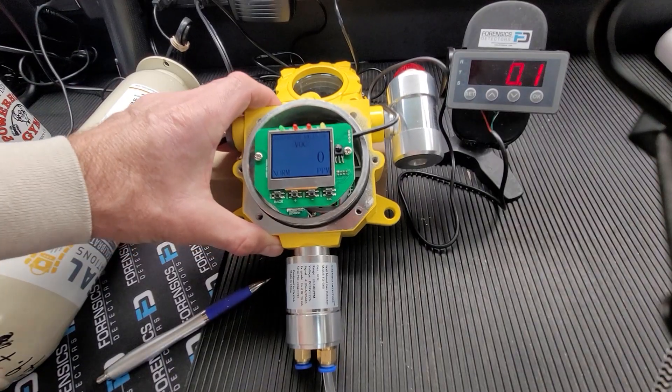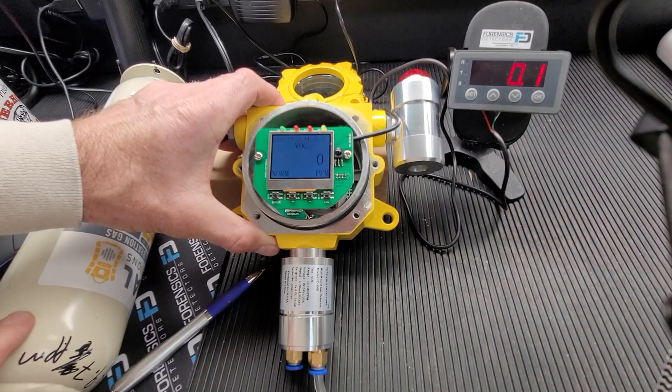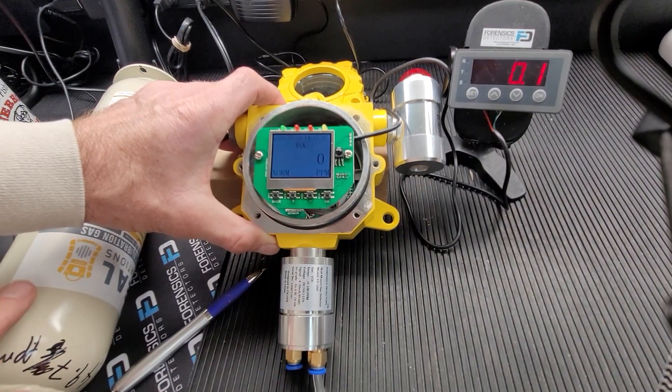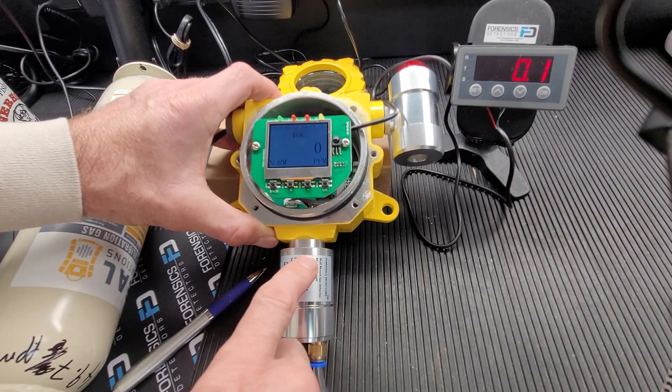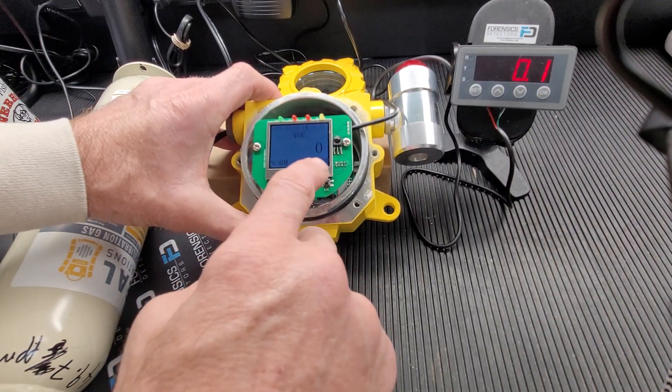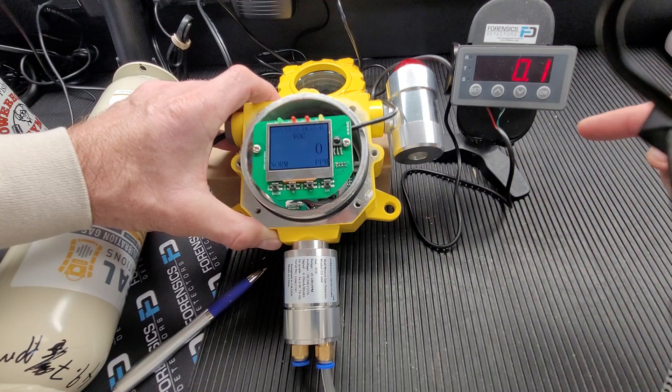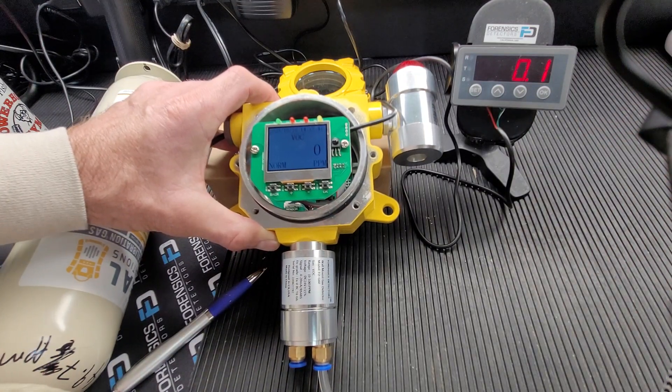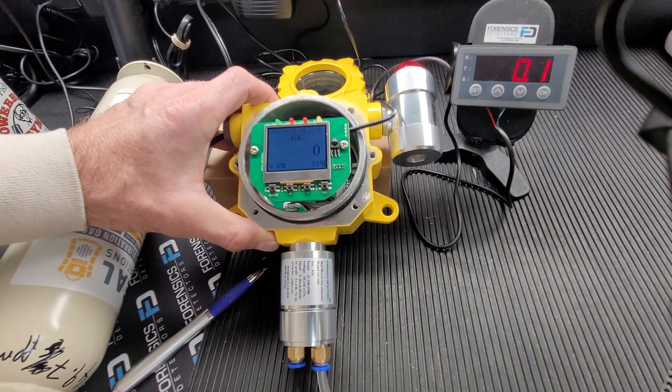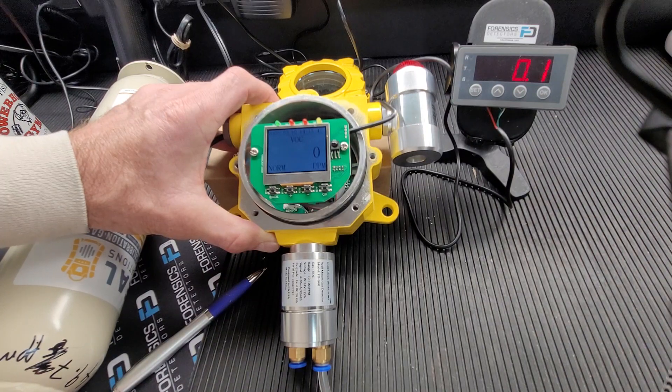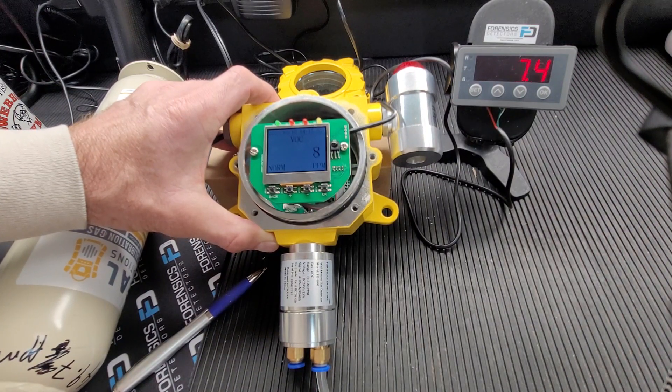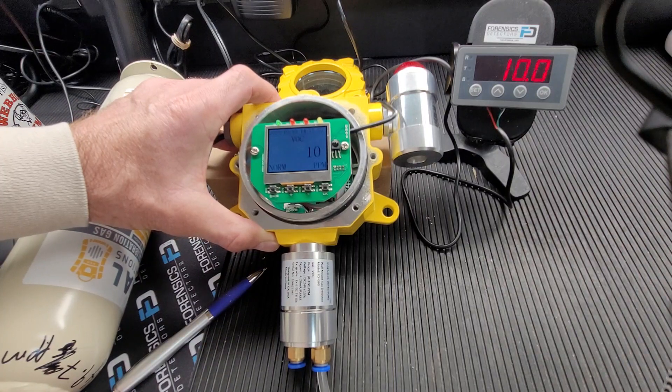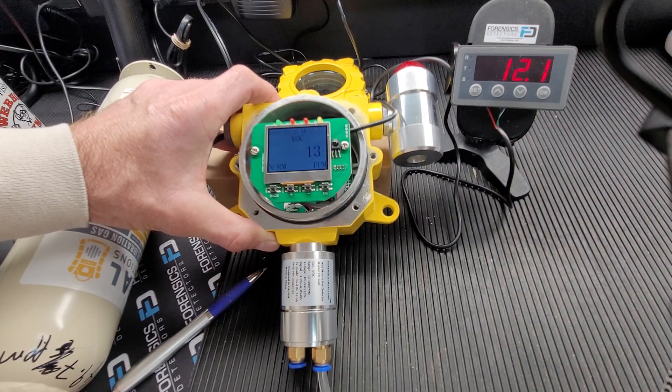So as you can see, we have a gas calibration bottle, isobutylene for VOC. It's connected to the calibration cap and straight onto the sensor head. As this increases, you will see a corresponding increase on the external 4 to 20 milliamp display. Let's pop in some gas. There it goes, and it tracks each other one-to-one. It's a beautiful setup. Very straightforward.